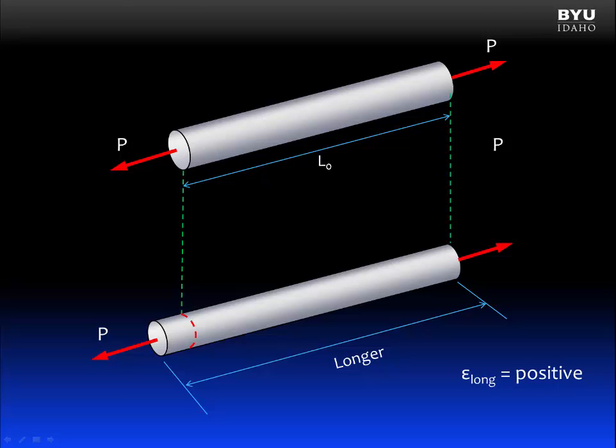Because our member is getting longer, the strain in the longitudinal direction is positive. But what about the lateral direction? As the member stretches, the lateral dimension decreases. It becomes narrower. So our lateral strain is negative. You can see these are opposite of each other.